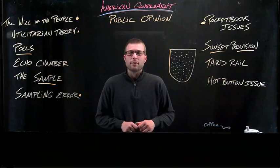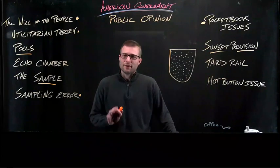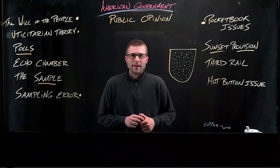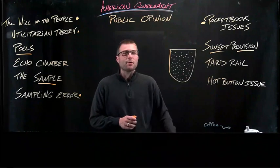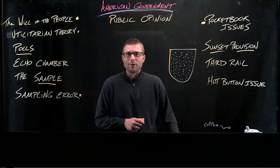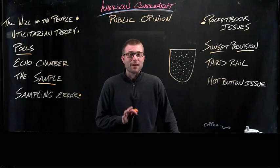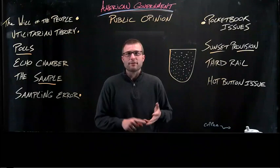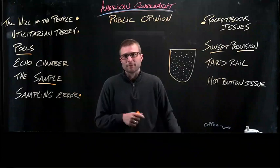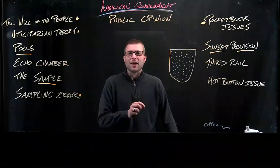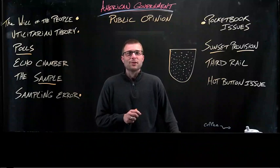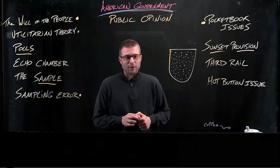For instance, a majority of Americans routinely tell pollsters they favor a significant cut to federal income tax rates. But many in the same group will also tell pollsters they support expanded government services and programs, particularly the programs they personally benefit from - Social Security, Medicare, the Military Veterans Affairs, food assistance benefits, etc. You cannot actually have your cake and eat it too, but you can certainly tell a polling agency that's what you want.